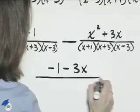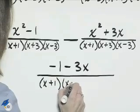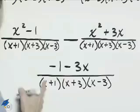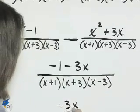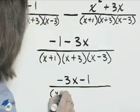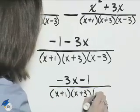The denominator is x plus 1, x plus 3, x minus 3. And to put this numerator in descending order, we'd have negative 3x minus 1 over that denominator of x plus 1, x plus 3, x minus 3.